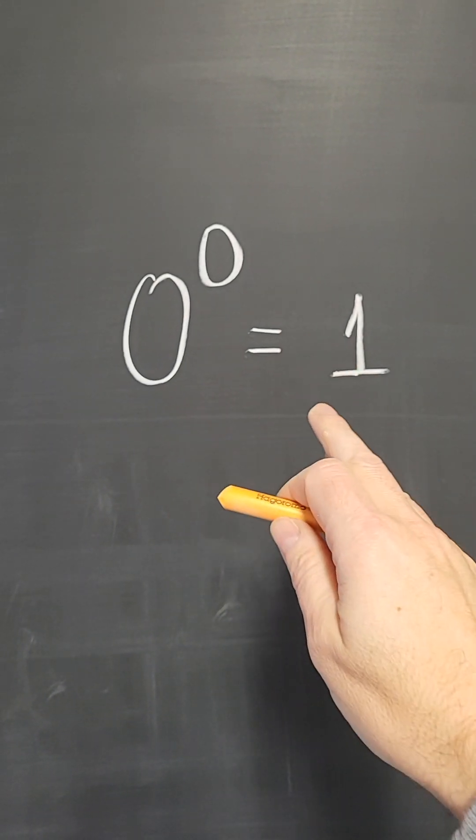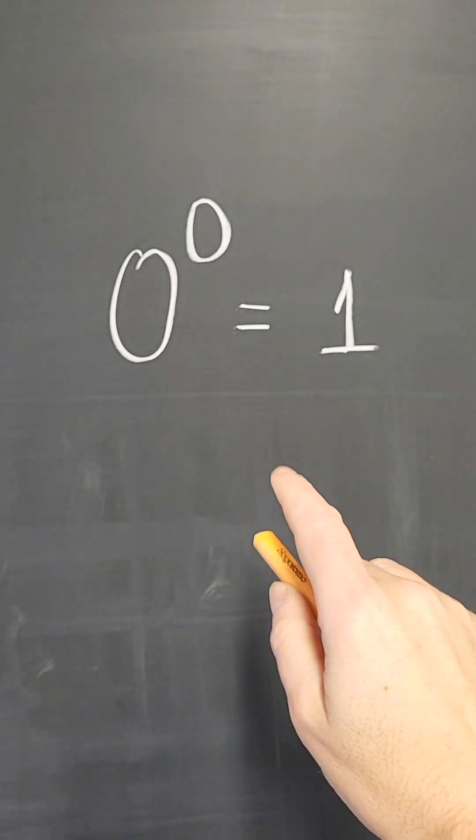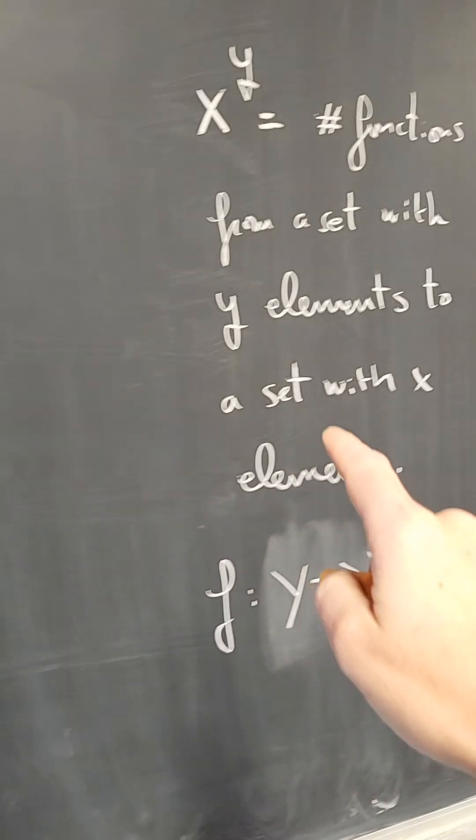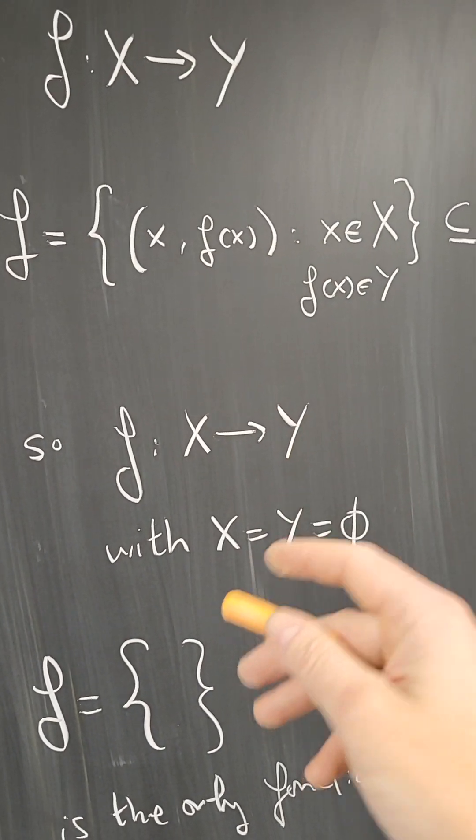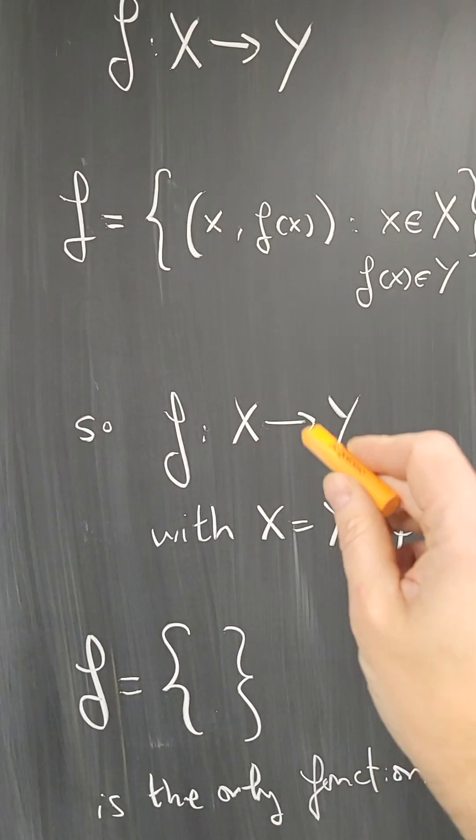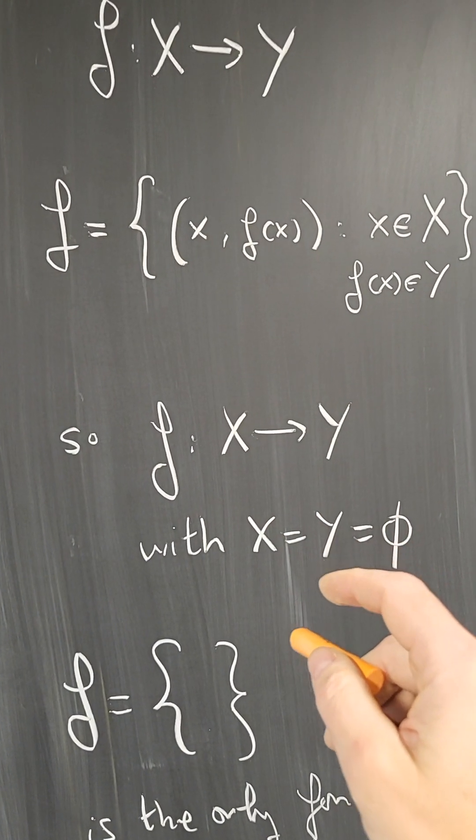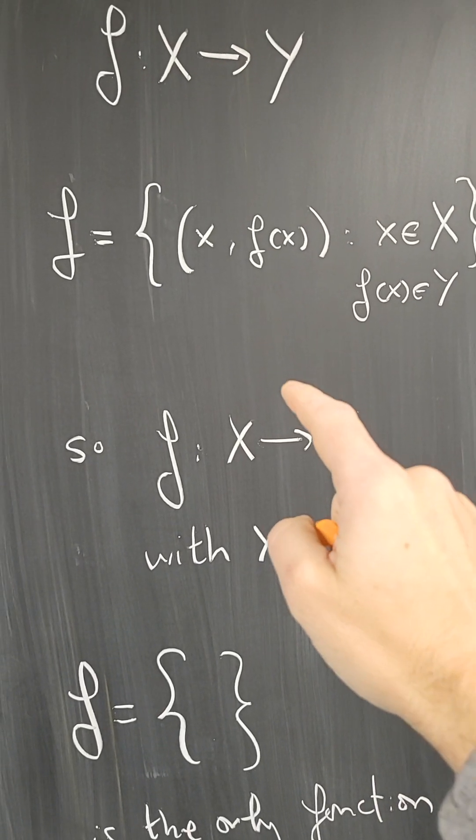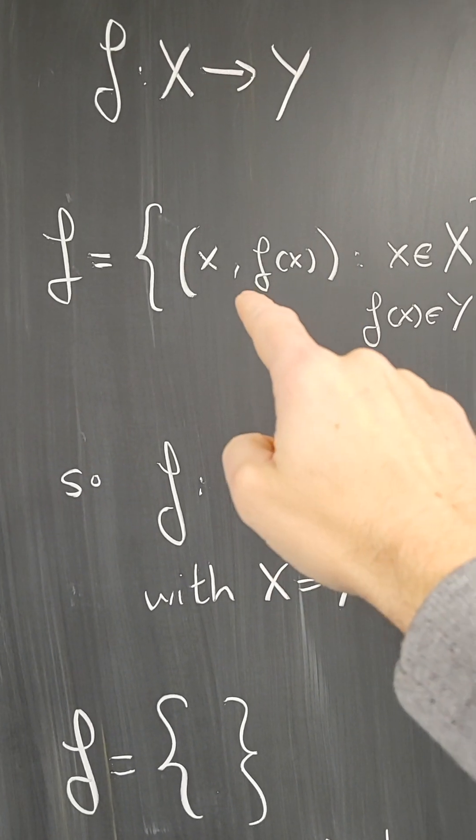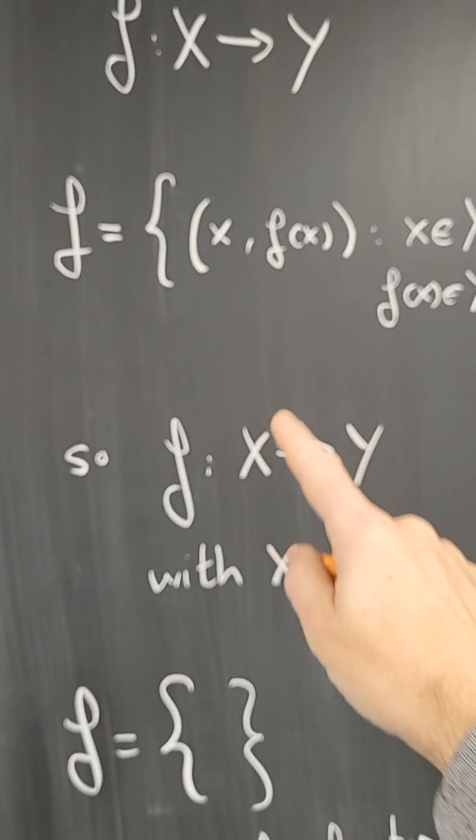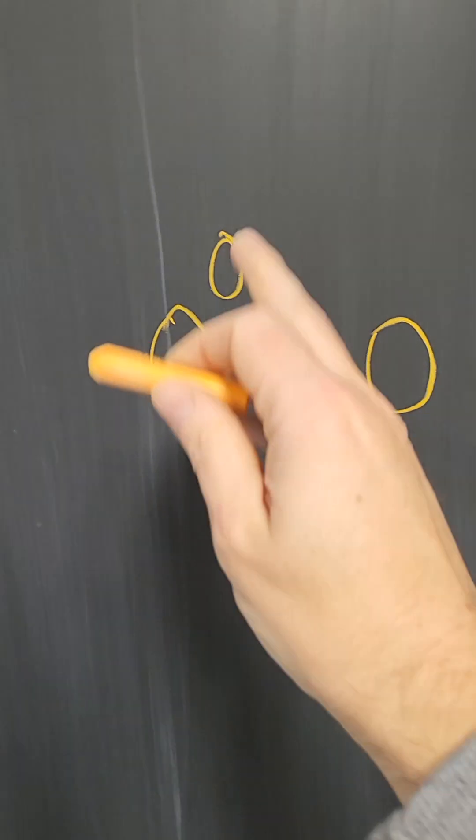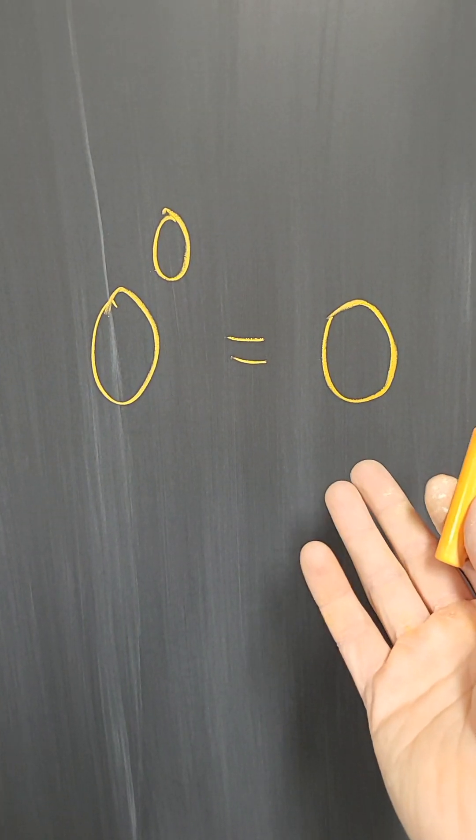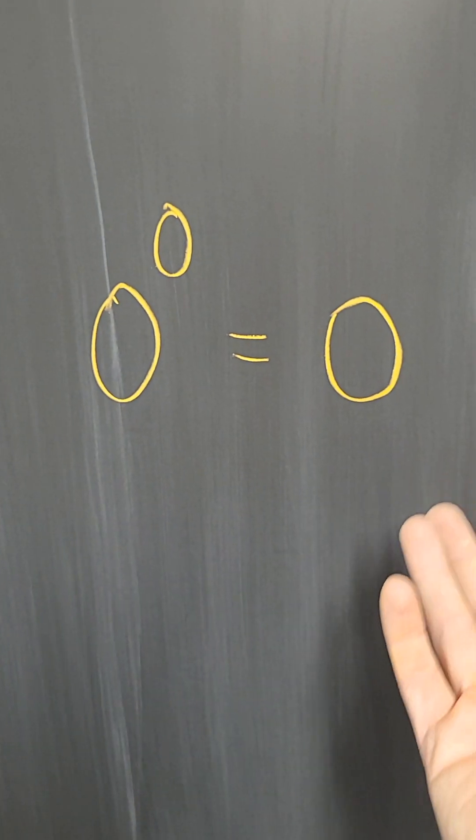So, in summary, is zero to the zero equal to one? No. You can define it to be one if you are defining x to the y in this way and functions in that way. But even just a simple modification to your definitions, a common sense modification to force functions to take at least one value, would give you a different definition of zero to zero that does not agree with zero to zero equals one.